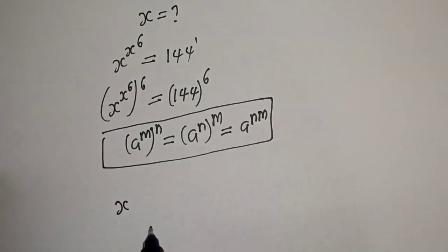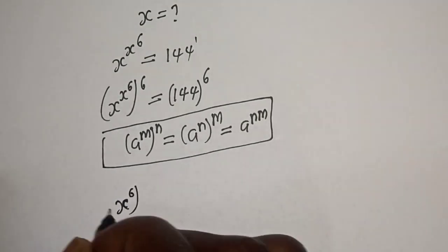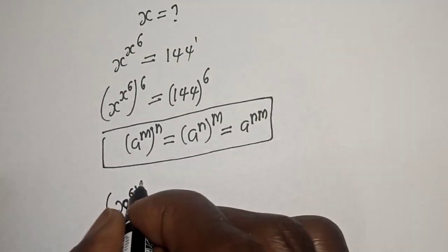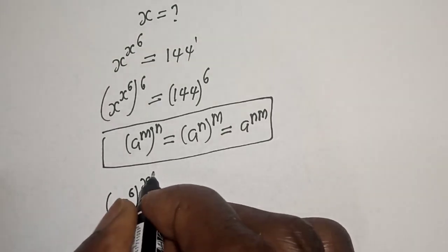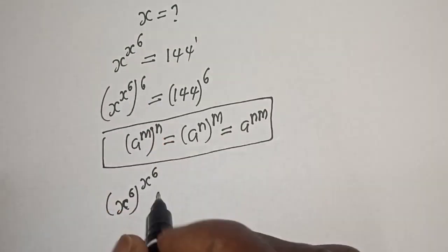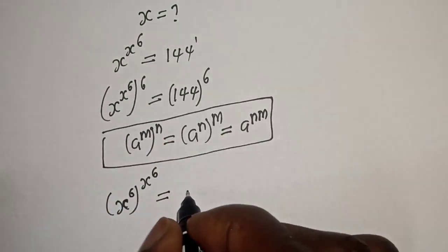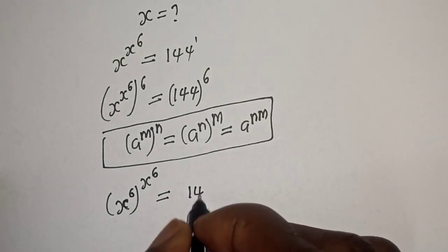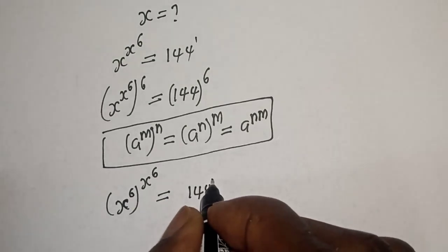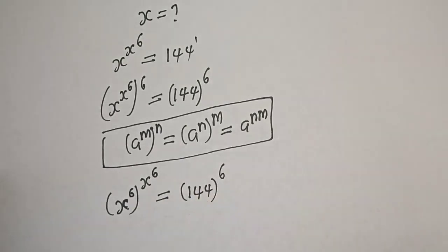So s raised to power 6 to the power of s raised to power 6 on the left hand side is equal to 144 to the power of 6.